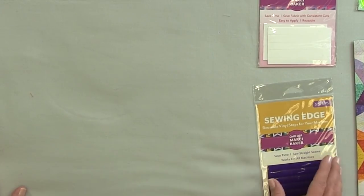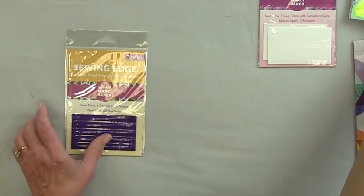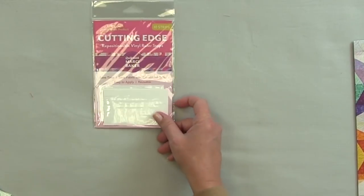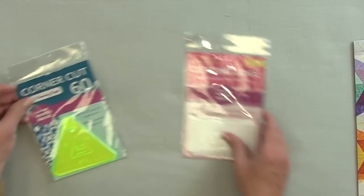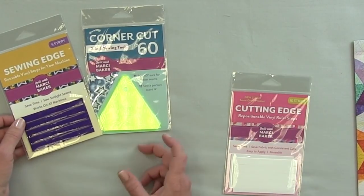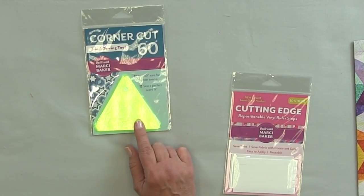Let's look at some of the tools that we use. One of them is called Sewing Edge and that goes on the bed of the sewing machine. Then we also have Cutting Edge and that goes on the underside of the ruler. And then we also have Corner Cut and that one we use with the Sewing Edge to mark where the scant quarter is or we use it for trimming 60 degree ears off.